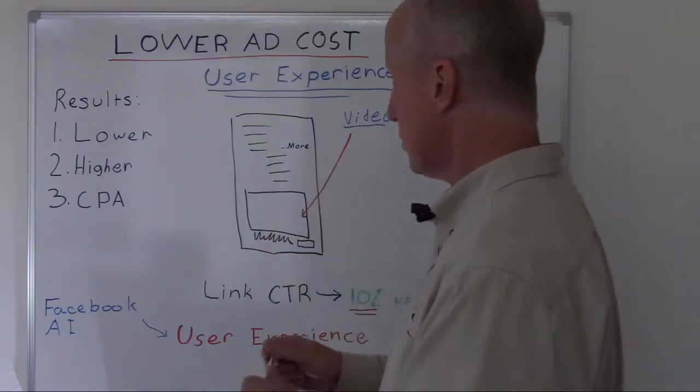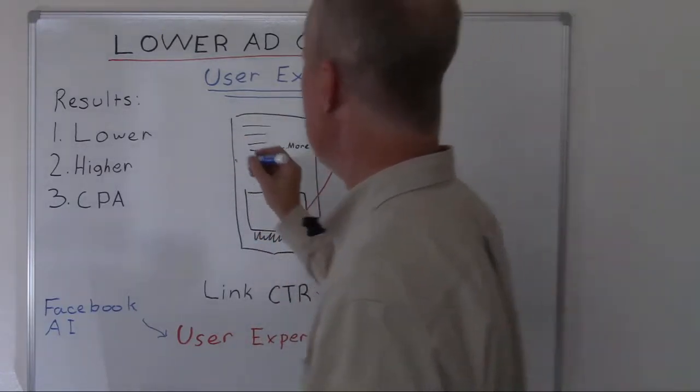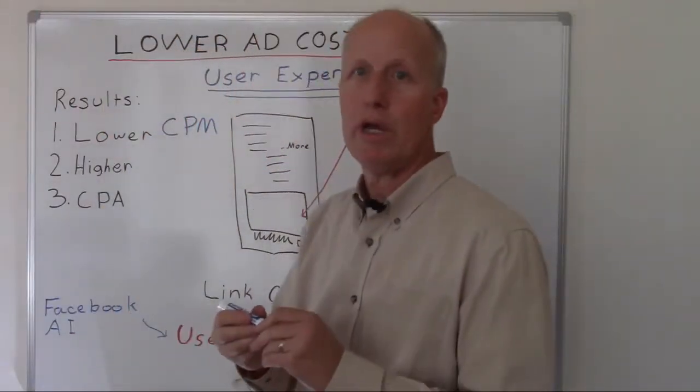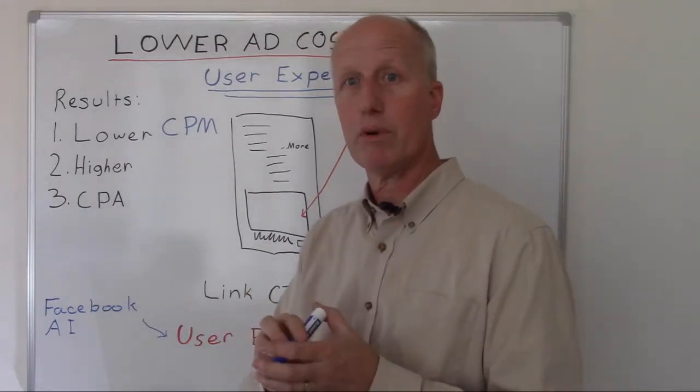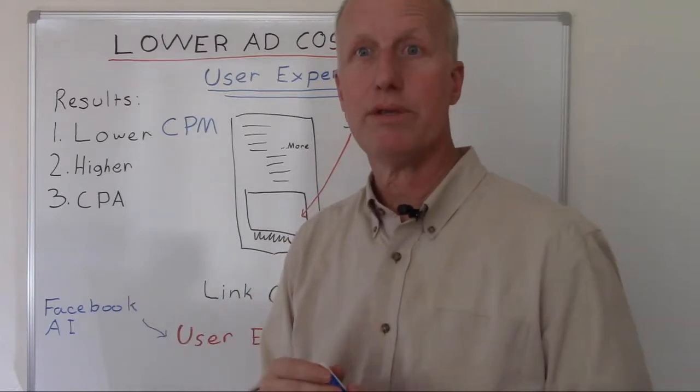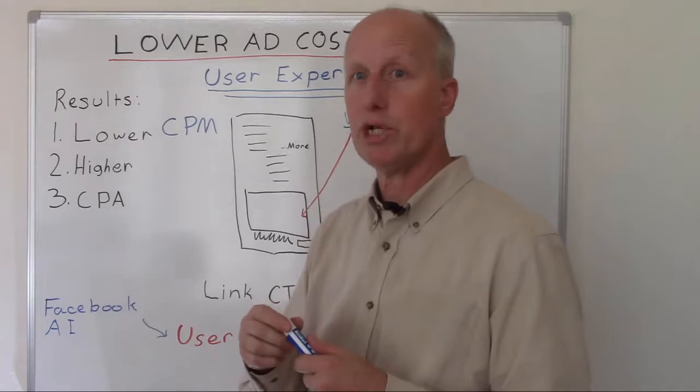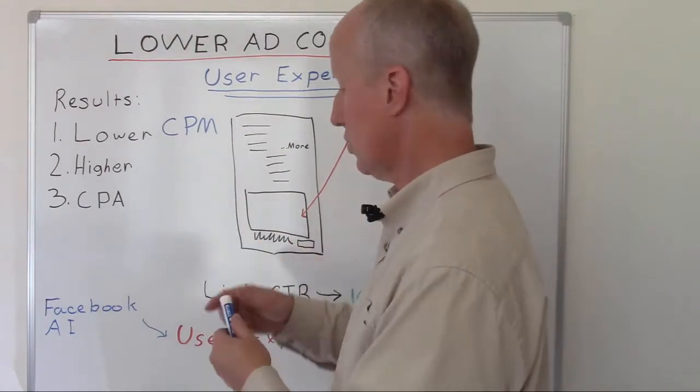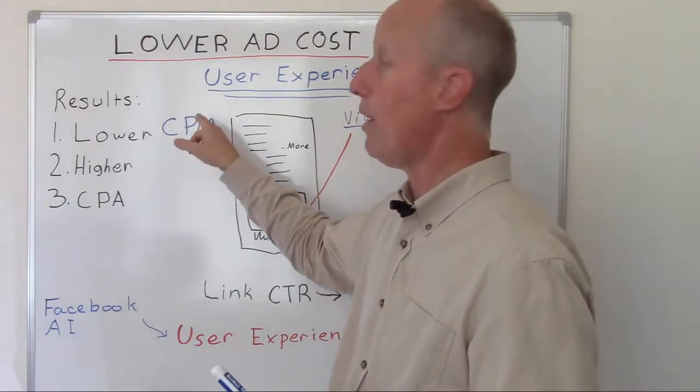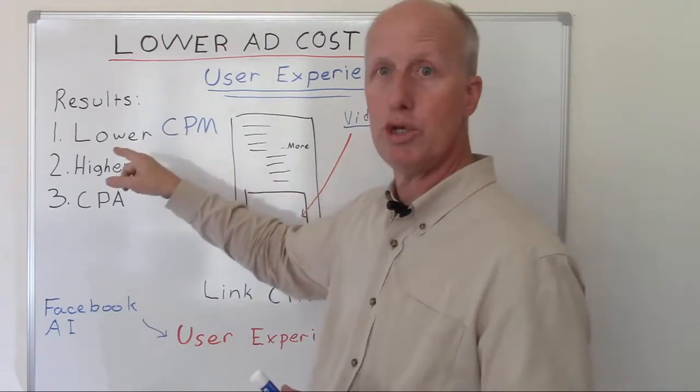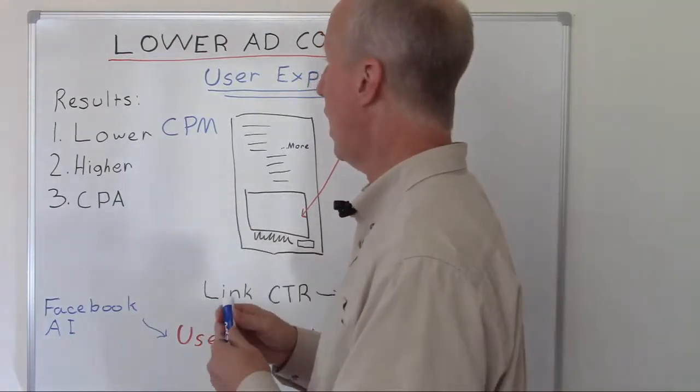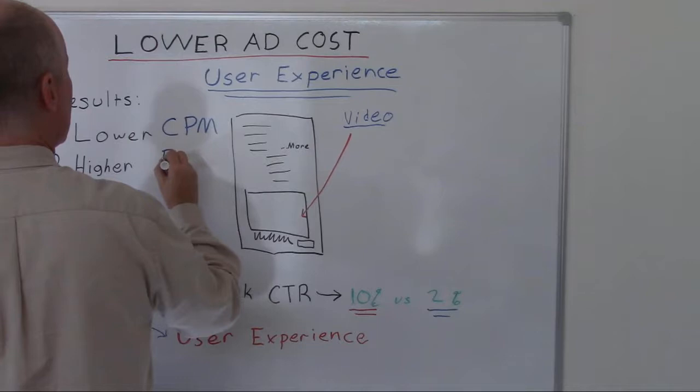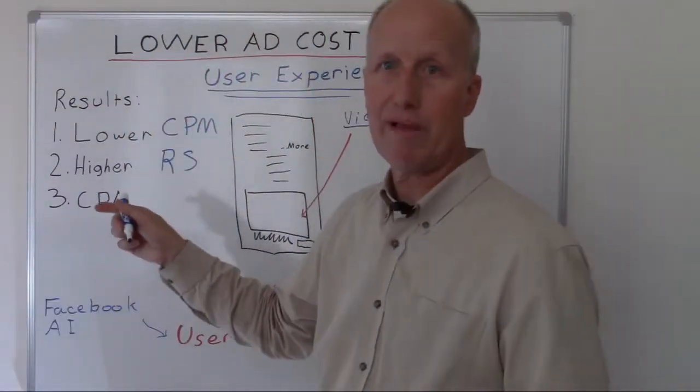Applying this all together - we're going to have effective ad copy, a really excellent video ad, then we're going to do it on a link post. The results from doing all this right is we'll see lower CPM. That's cost per thousand. Even when we run an ad set for the purchase objective, we pay based on impressions. What should go up is your relevance score.